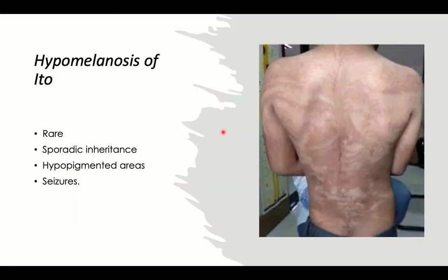The last neurocutaneous syndrome mentioned is hypomelanosis of Ito, which has sporadic inheritance. It is a rare disorder with a combination of dermatological lesions in the form of hypopigmented areas associated with seizures.